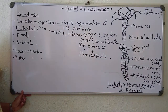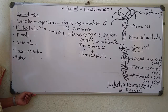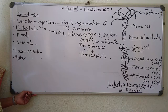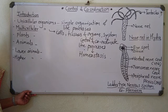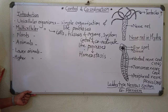In multicellular organisms, there are specific systems present — for example, digestion, respiration, excretion, and nervous coordination — and they bring about different life processes and maintenance of homeostasis.